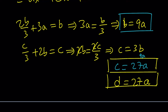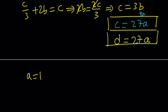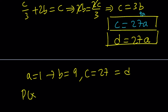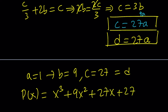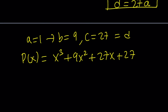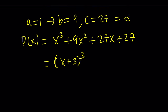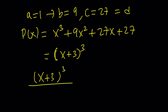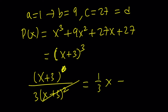So B, C, and D all depend on A. If A equals 1, then B equals 9, C equals 27, and D equals 27. Our polynomial is X cubed plus 9X squared plus 27X plus 27, which is actually a perfect cube — it's X plus 3 to the third power, by the binomial theorem. This works because when you differentiate it you get 3 times X plus 3 squared, and two factors cancel, leaving 1 over 3X plus 1.